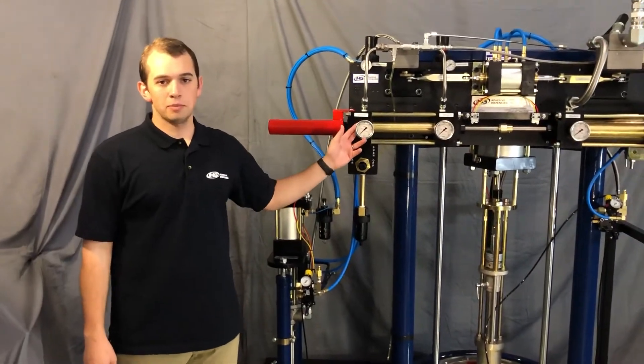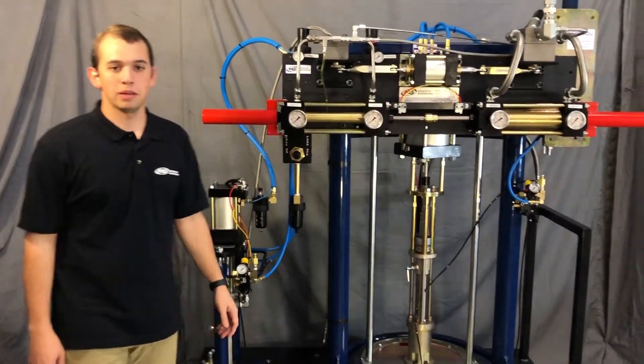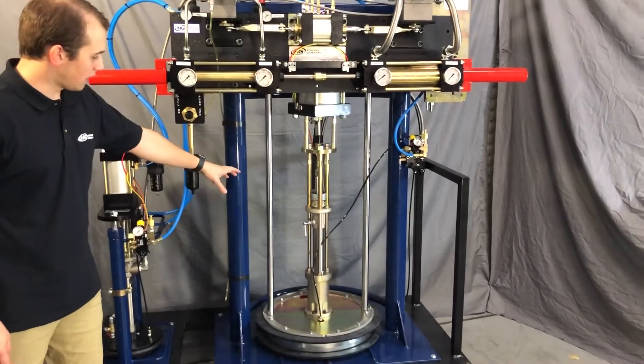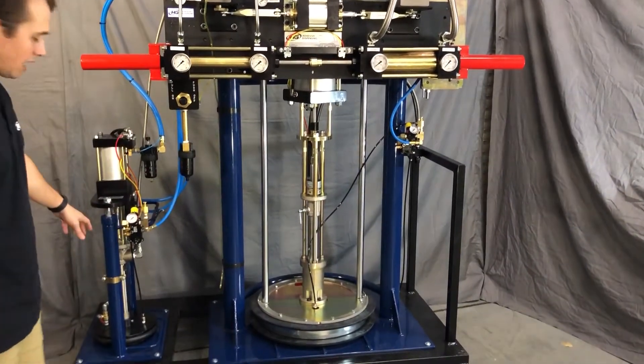The HG Adhesive Dispensing Big Bear is a meter mix dispense system meant for two-part adhesive in a 55 gallon drum of base and a five gallon bucket of catalyst.